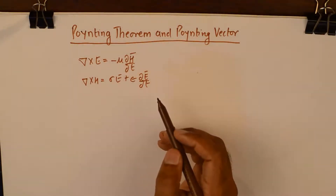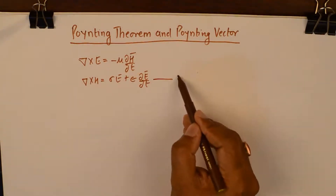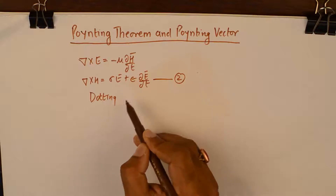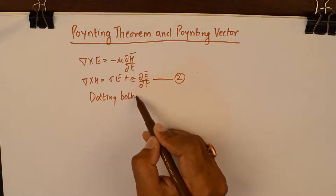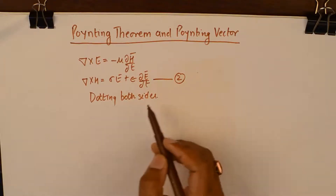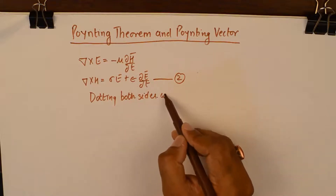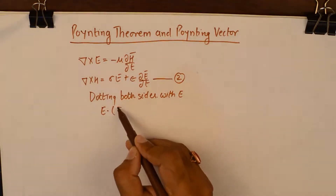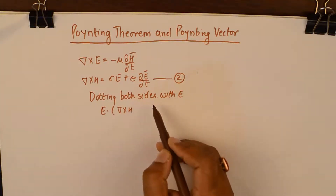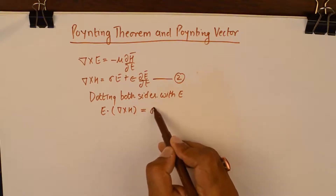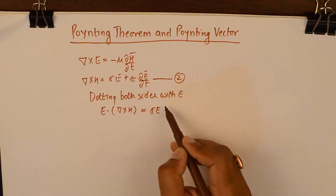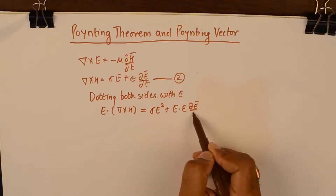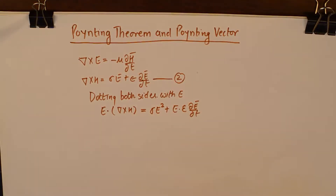In the first step, what we do is take equation number 2 and dot both sides by E. That gives me E dot del cross H, and on the right hand side I get this, which is pretty simple.